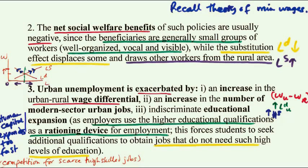Urban unemployment is made worse by an increase in the urban-rural wage differential, an increase in the number of modern-sector urban jobs, and indiscriminate educational expansion — as employers use higher educational qualifications as a rationing device for employment, forcing students to seek additional qualifications to obtain jobs that do not require such high levels of education.